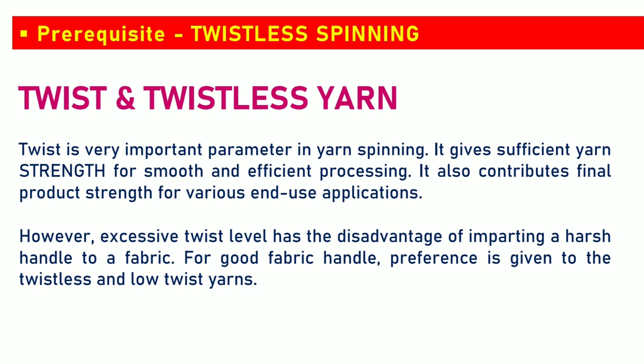Let's start with the prerequisite: twist and twistless yarn. Twist is a very important parameter in yarn spinning. It gives sufficient yarn strength for smooth and efficient processing, and also contributes to final yarn strength for various end-use applications. However, excessive twist level has the disadvantage of imparting a harsh handle to a fabric. For good fabric handle, preference is given to twistless and low twist yarns.